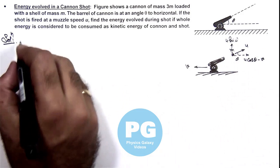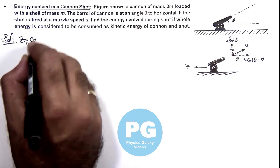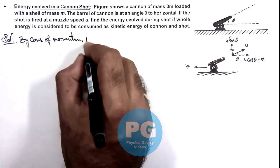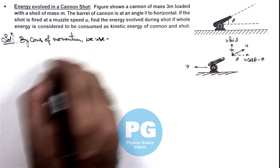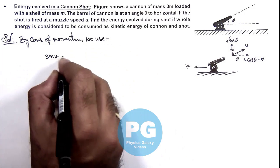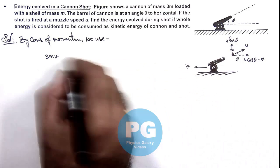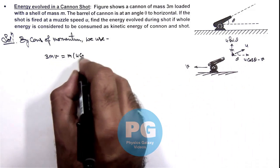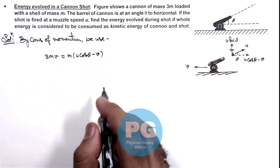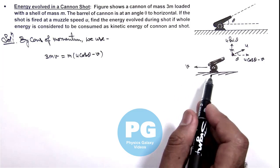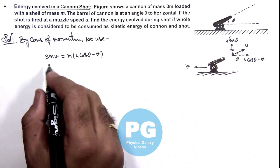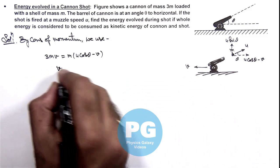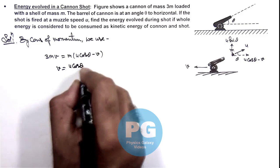In this situation we can say by conservation of momentum, we use 3mv, which is the momentum in this cannon toward left, must be equal to the momentum of shell which is m times u cos theta minus v, because net momentum of the system must be zero. So in this situation, we are getting the relation in the velocity of cannon and the muzzle speed, which is v equals u cos theta divided by 4.